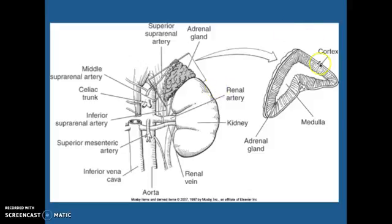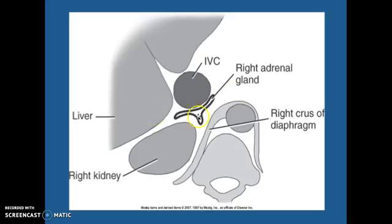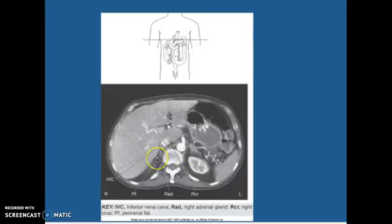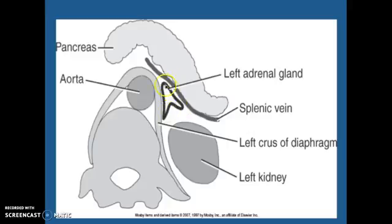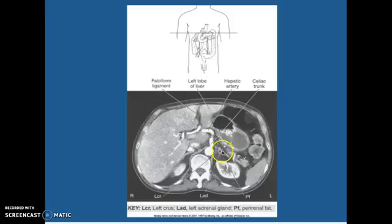Looking at the adrenal glands, this is what they look like — the cortex on the outside, medulla on the inside. They sit up on top of the kidneys typically. You can see the crus is coming down and you have your left adrenal gland and your right one is right there. This is your spleen and your liver. Here's your right adrenal gland — it's between your aorta and your IVC where you'll see your adrenal gland. Your left one is by the pancreas.